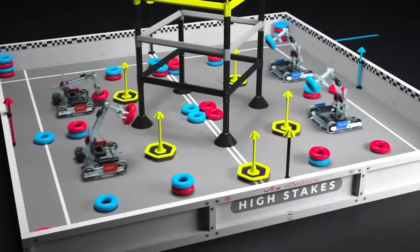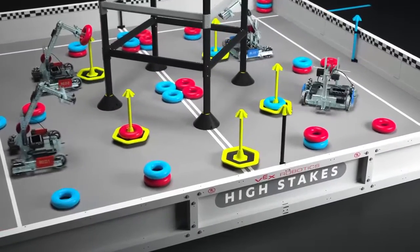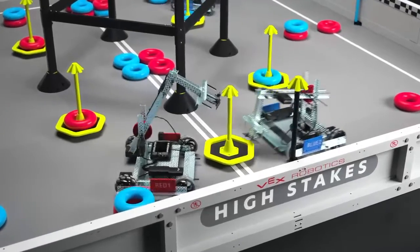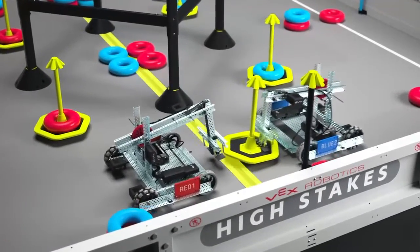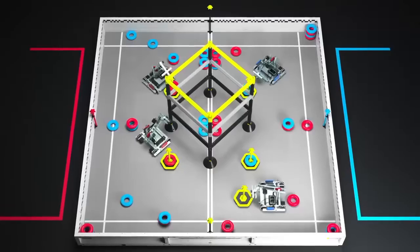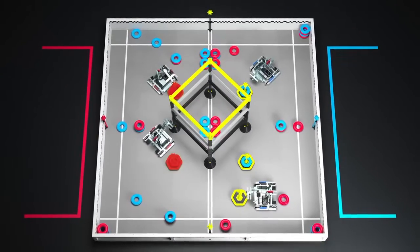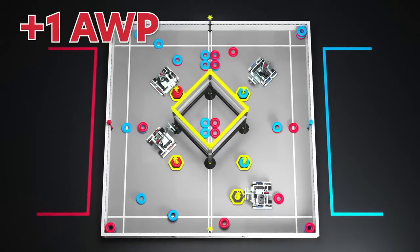Matches begin with a 15 second autonomous period, where robots operate without input from their drivers. Robots begin with one ring as a preload and must stay on their side of the autonomous line. Alliances also have the opportunity to earn an autonomous win point by completing a certain set of tasks during the autonomous period.